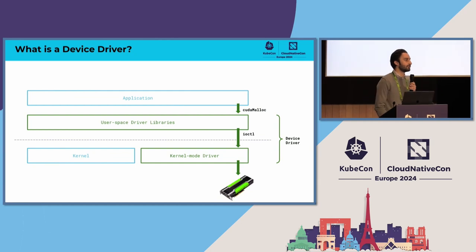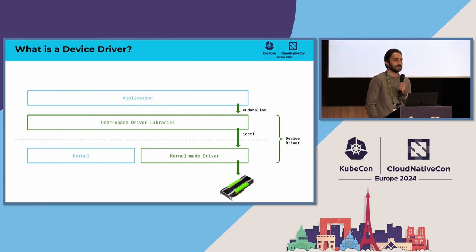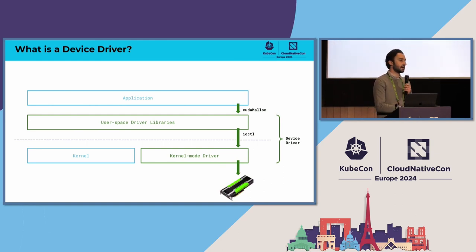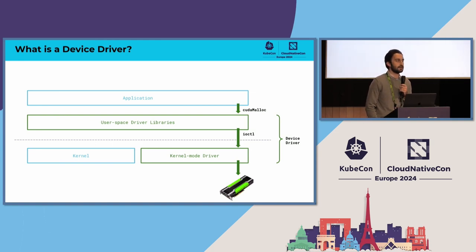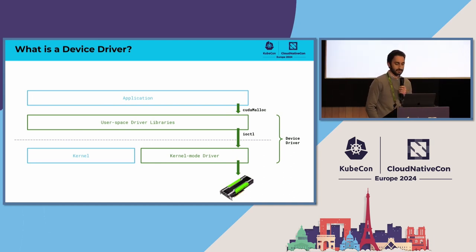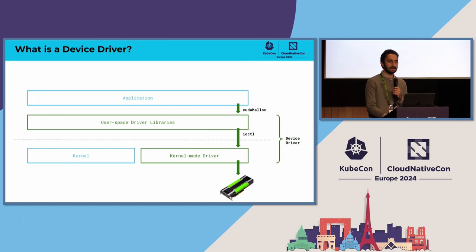What is a device driver? Simply put, a driver abstracts a piece of hardware. On a Linux system, typically it's a kernel space component — a loadable kernel module that you build against your kernel and have to recompile on kernel updates. You also have, along with it, some user space driver libraries that provide abstractions in user space. These are usually versioned together, and you need both to leverage your device or accelerator. So when I say device driver, I mean both the user space shared libraries and the kernel module.